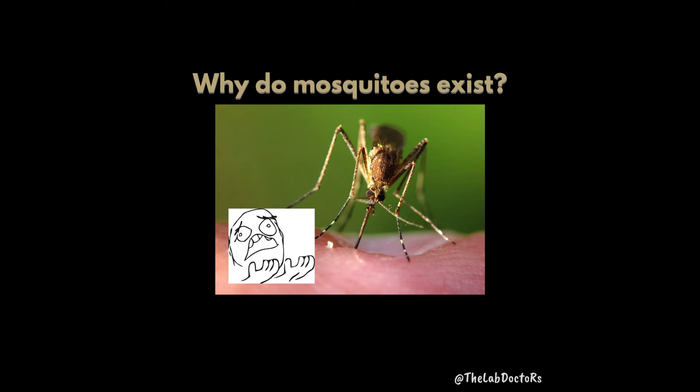We live in Singapore, and I think one of the most annoying animals that everyone can agree on is mosquitoes. They just feed on our blood, make it itchy, and then spread mosquito-borne diseases like dengue.